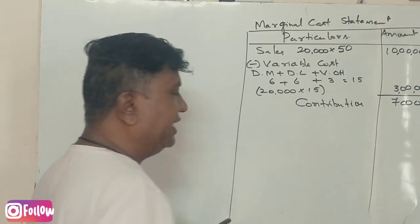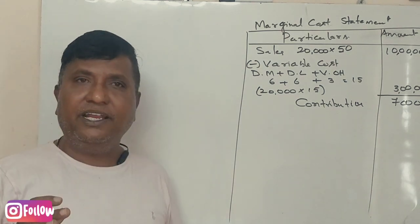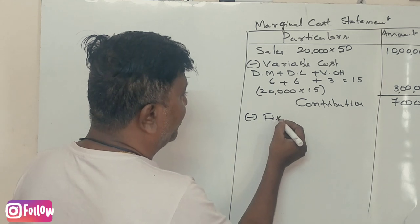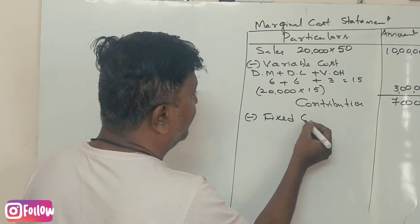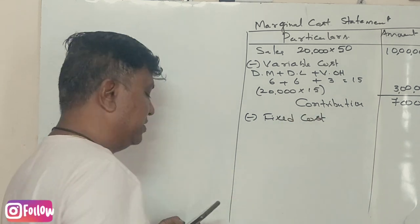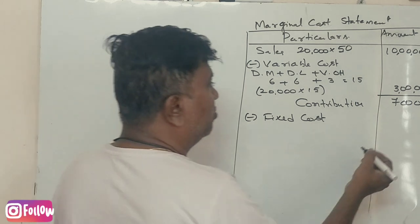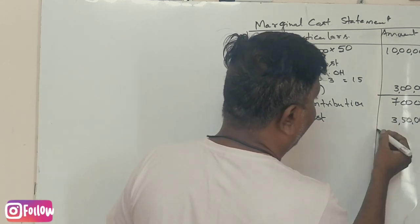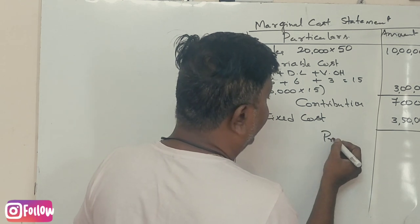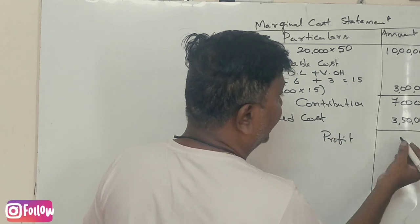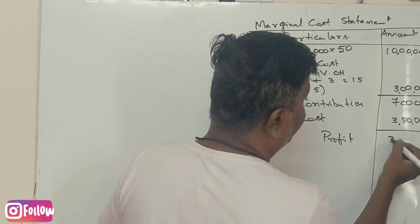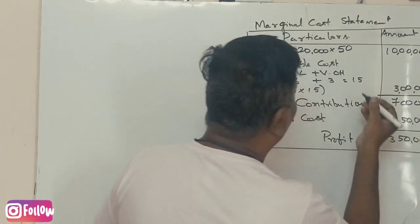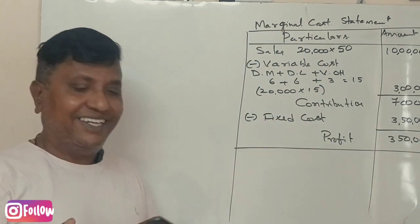Contribution is nothing but sales minus variable cost. The fixed cost is ₹3,50,000. Contribution minus fixed cost gives us the profit. The profit value is ₹3,50,000. This is the marginal cost statement.